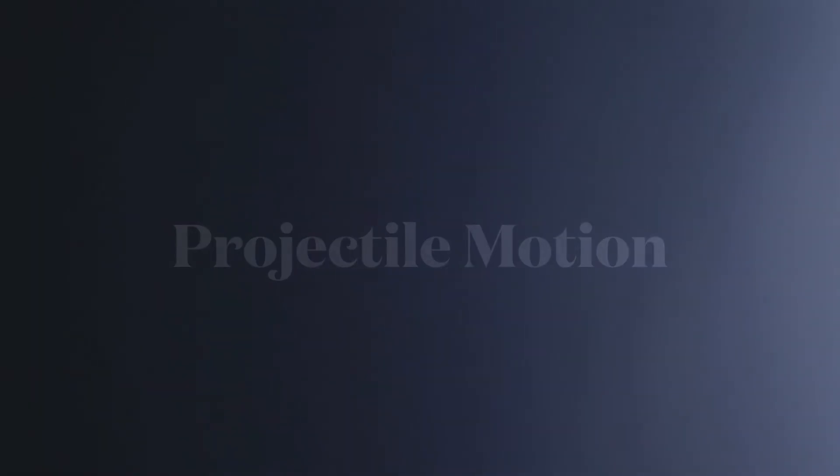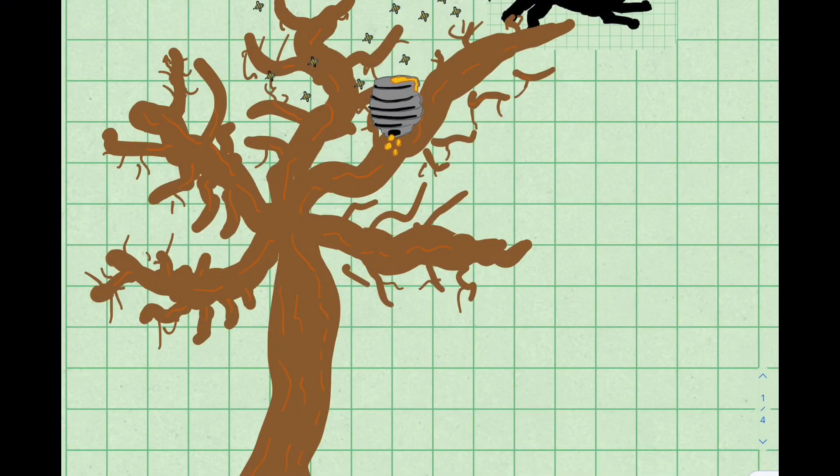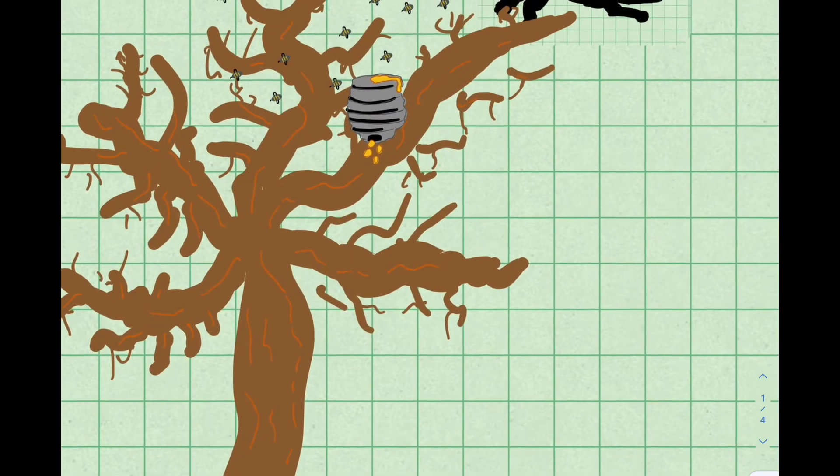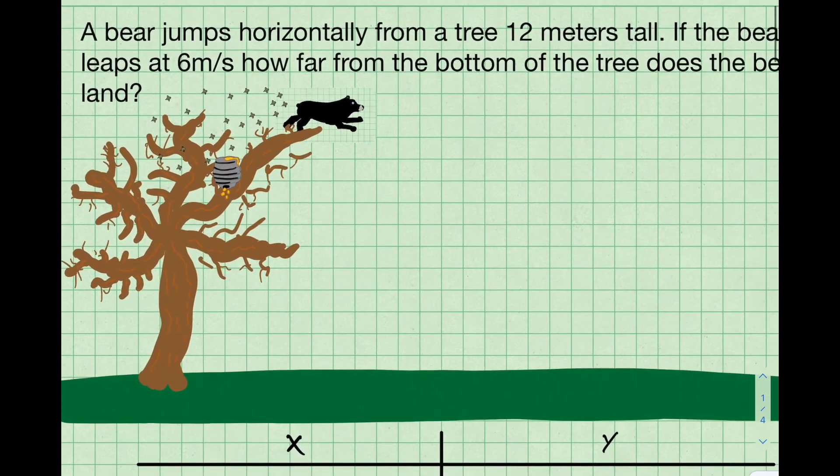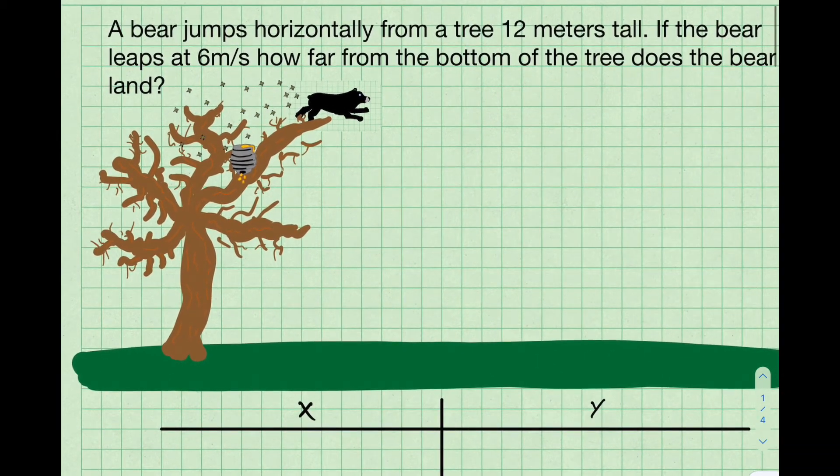All right, everybody, let's talk about some projectile motion. So here we go. We got a beehive and some honey dripping out of it. Very exciting. And then some bees, and the bees are chasing a bear. Bears love honey. Everybody knows that.